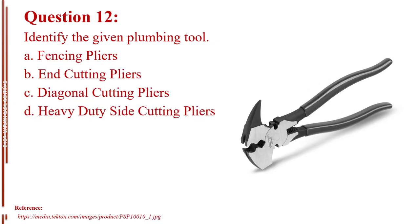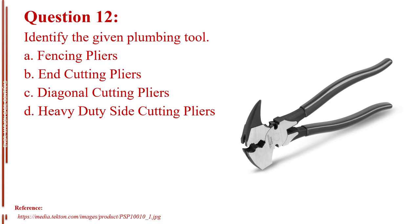Question number twelve. Identify the given plumbing tool. Letter A, fencing pliers. Letter B, end cutting pliers. Letter C, diagonal cutting pliers. Letter D, heavy-duty side cutting pliers. The answer is Letter A, fencing pliers.